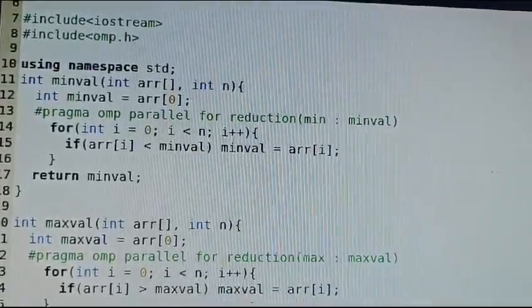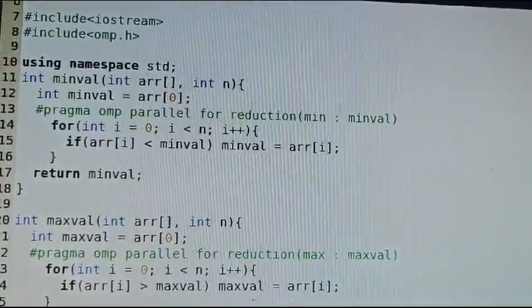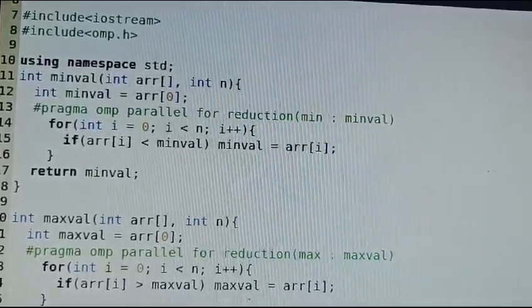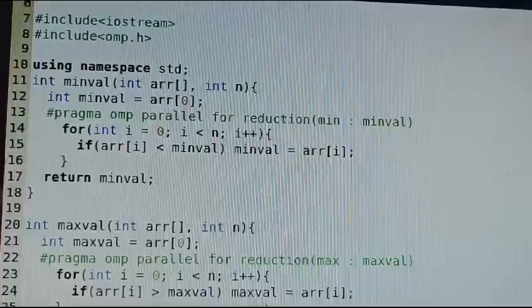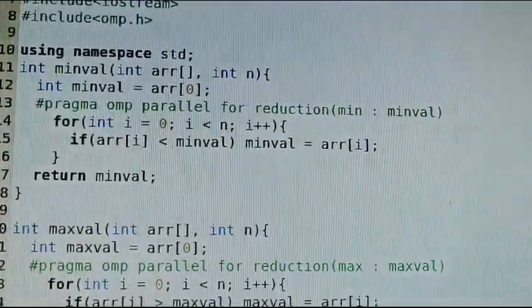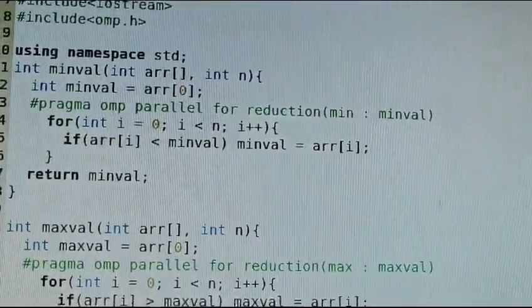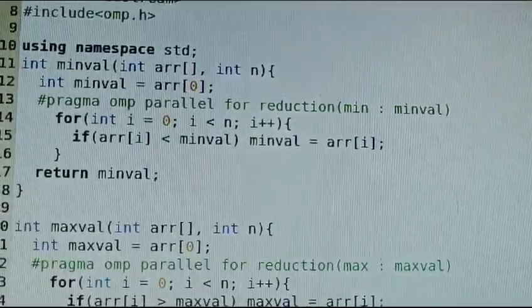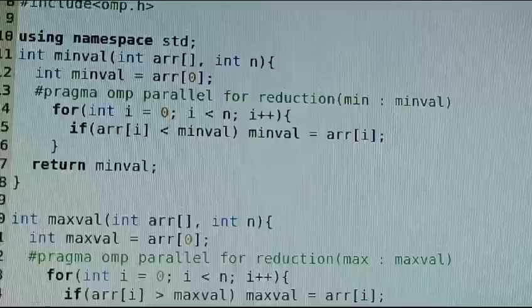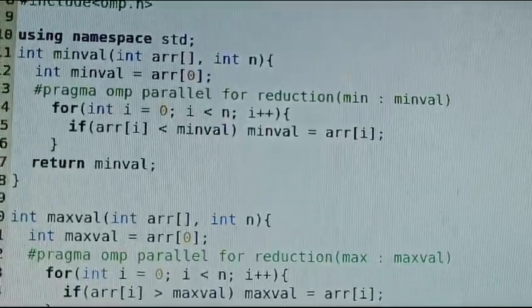Today we will discuss LP5 third assignment to implement minimum, maximum, sum and average operations using parallel reduction. Hash include iostream for standard input output, then hash include omp.h for parallel processing of multiple threads.